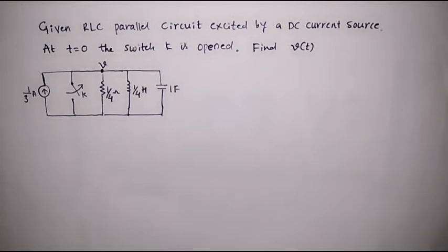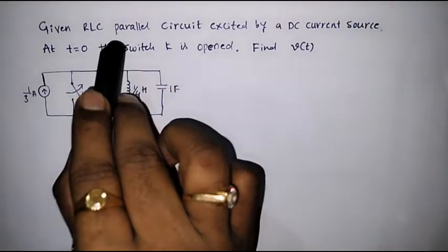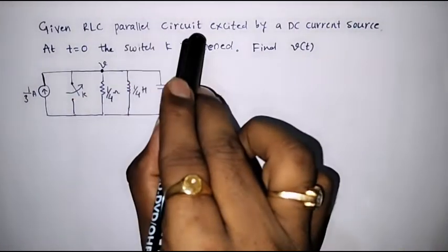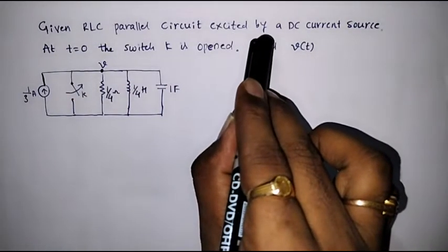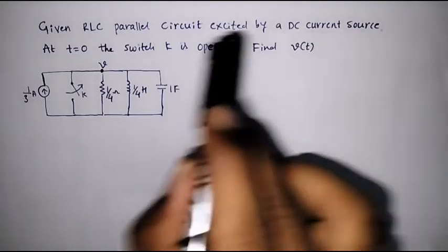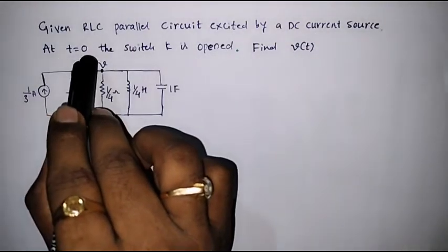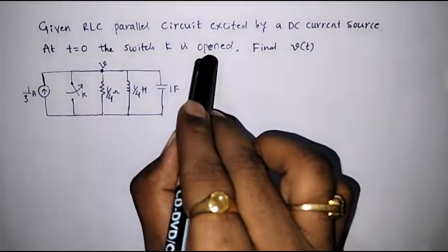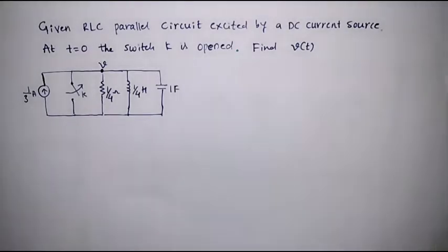Let's take one example on an RLC parallel circuit. Given an RLC parallel circuit excited by a DC current source, at t equal to 0, the switch k is opened. Find V of t.